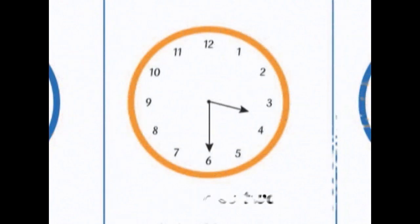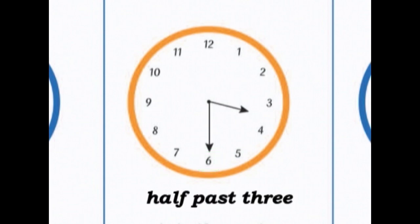Look at clock number 3. I bet you can do this yourself. Look at the little hand. Where is it pointing? Look at the big hand. Where is it pointing? What time is it? It's half past 3.